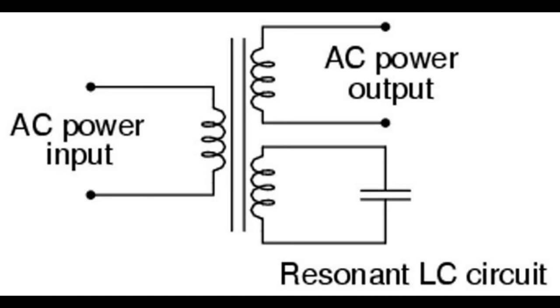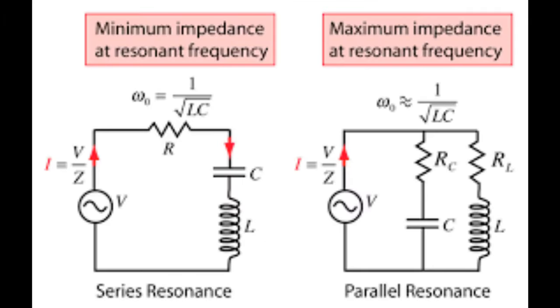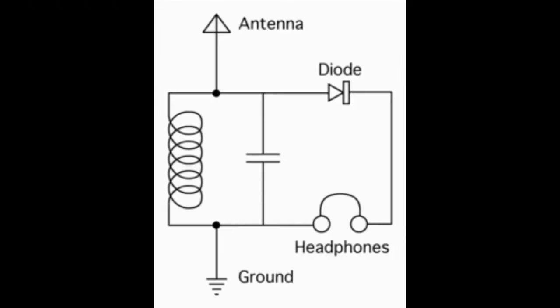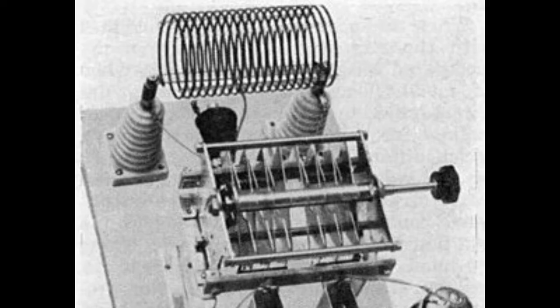Another use of resonance is in applications where the effects of greatly increased or decreased impedance at a particular frequency is desired. A resonance circuit can be used to block or present high impedance towards a frequency or a range of frequencies and then it acts as a sort of filter to strain certain frequencies out of the mix of others. This is the basic principle that a radio receiver works on.